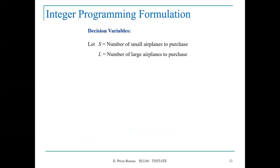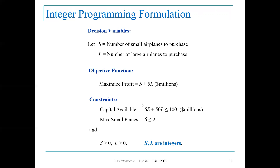Let's go back to the model and now formulate it as an integer programming formulation. We have the same decision variables S and L, the same objective function, and the same constraints. The only difference now is the additional statement forcing the decision variables to be integers.